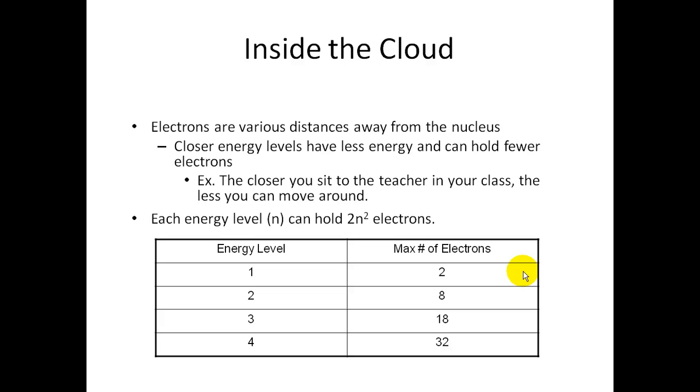Inside the electron cloud, we have electrons that are various distances away from the nucleus. The closer energy levels have less energy and can hold fewer electrons. For example, the closer you sit to the teacher in your class, like in elementary school, the less that you'll be able to move around because your teacher is right there. Each energy level, which is abbreviated N, can hold two N-squared electrons. For example, in the first energy level, which is the closest to the nucleus, that level can only hold two max electrons. In energy level two, it can hold eight. And most atoms strive to have eight in their energy level, the second energy level. Energy level three would have 18, for example, and energy level four would have 32.